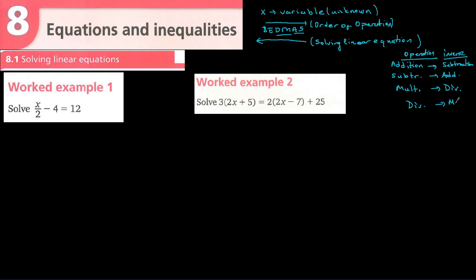Let me explain with an example. There is an unknown term: x divided by 2, minus 4, equals 12. Looking at the operations around the unknown: the first operation is division, and the second operation is subtraction.